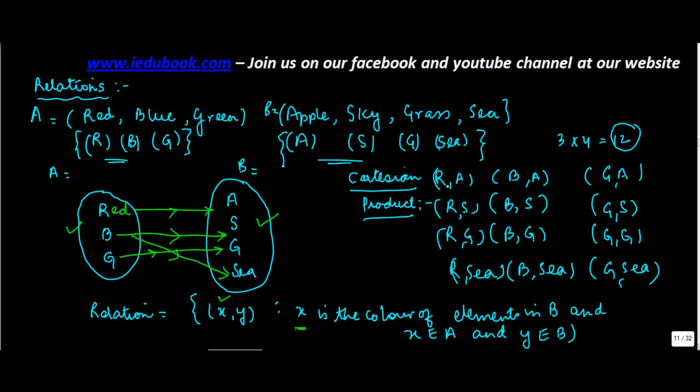So which all will be covered here? Red apple, blue sky, blue sea, green grass. So these four are basically covered by this relationship and these four when taken together form a subset of the Cartesian product. So this is basically how you deal with these situations.